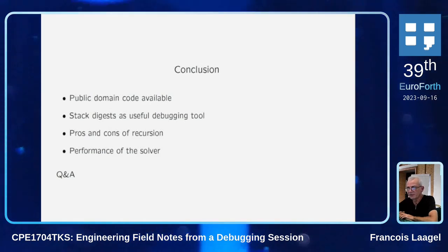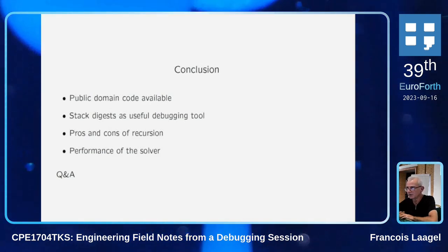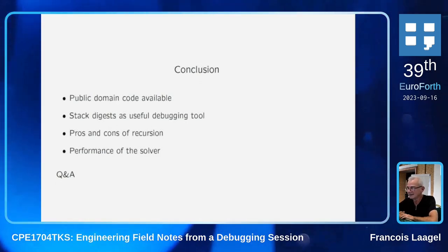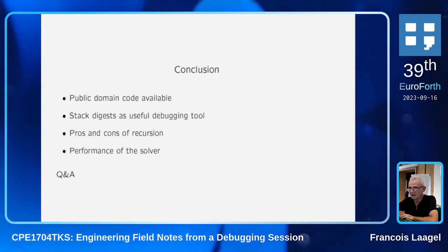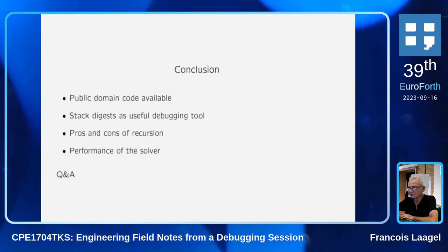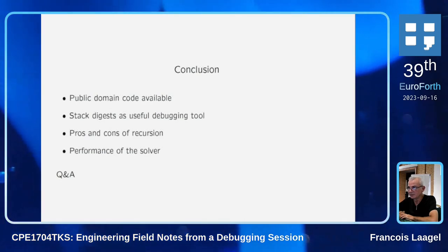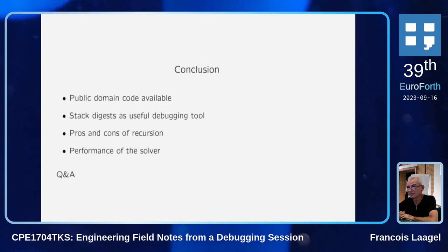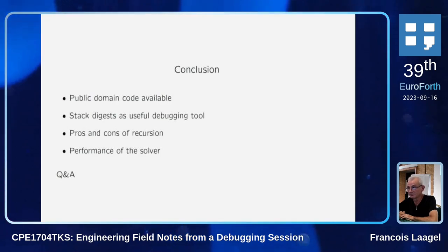The bug was an extra 2-drop which corrupted the stack, introduced when I worked on elimination of zeros appearing in the grid. The elimination of zeros alone is a 10 to 15% performance gain — that's significant.